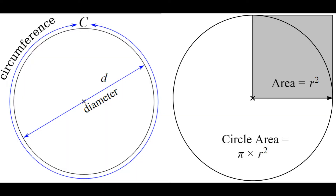Pi is an irrational transcendental number that describes the proportions of a circle. The circumference of a circle is pi multiplied by the diameter. The area of a circle is pi multiplied by the radius squared.